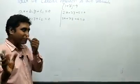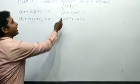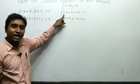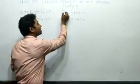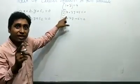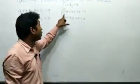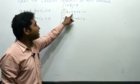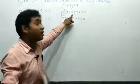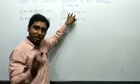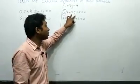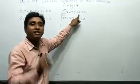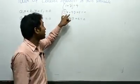And suppose the second equation is 3x + 7y + 6 = 0. Now from the first equation, the coefficient of x is 2, the coefficient of y is 3.